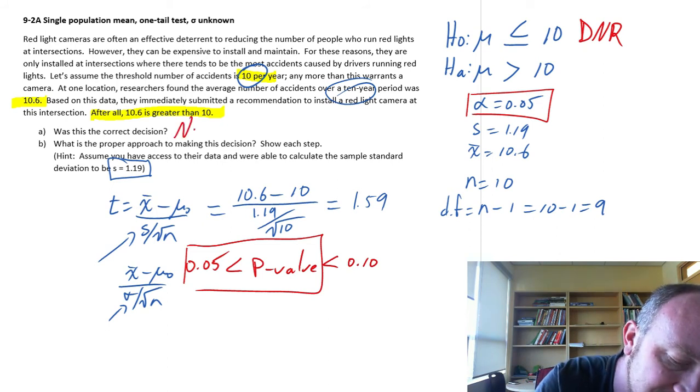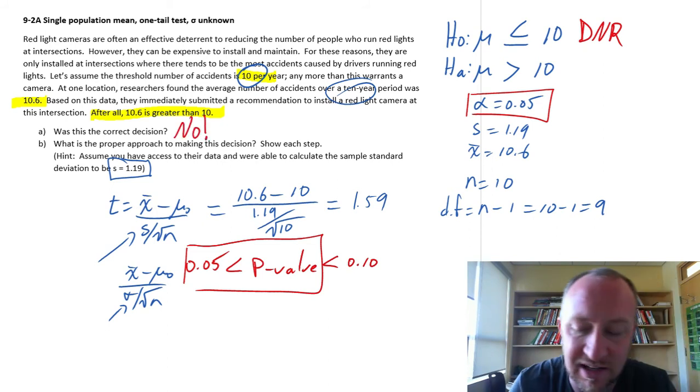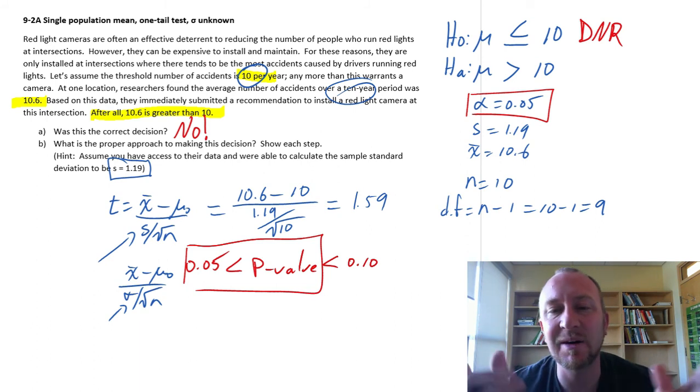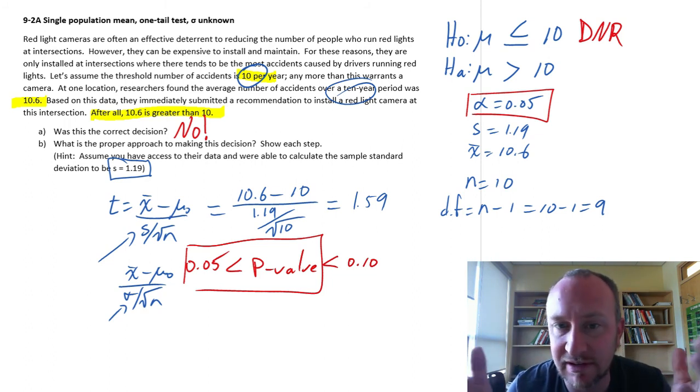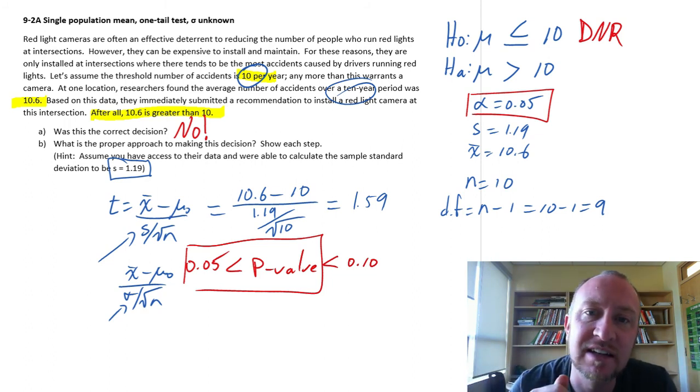So what does that mean? Is this the correct decision? No, it most certainly was not, even though the sample mean is greater than the hypothesized value. We are unable here to support the alternative hypothesis. I cannot say that that represents a statistically significant increase over the threshold of 10.